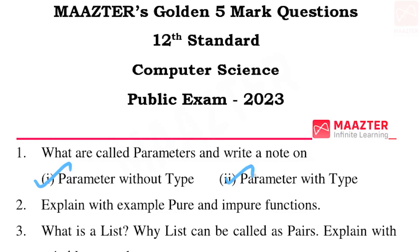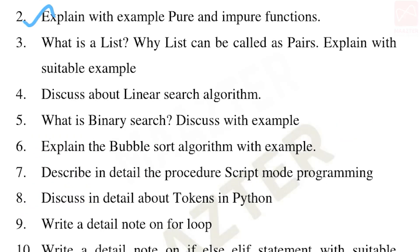Next, explain with example pure and impure functions. This question can also be asked for 2 marks or 3 marks, so it is an important 5-mark question. Next question: What is the list? Why can a list be called as pairs? Explain with a suitable example.